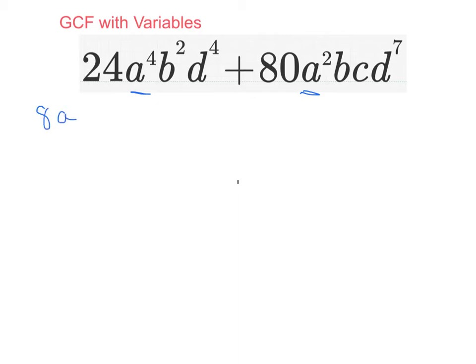For b, there is only one factor of b in each term. For c, well, that's not a common term. It's only in one of the terms. And then for d, there are four factors of d in each term, so d to the fourth.